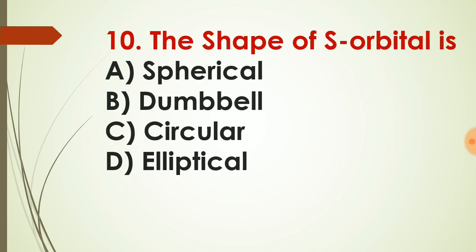Question number ten: the shape of the S orbital is? We have different orbitals in chemistry — S orbital, P orbital, D orbital, and F orbital. The shape of the S orbital is spherical — S for spherical. So the correct answer for question number ten is spherical. The dumbbell shape is the shape of the P orbital. Therefore, option choice A — spherical — is the correct answer for question number ten.